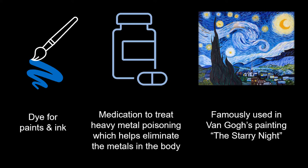Prussian blue is known to be used as a pigment, dye, and even medication. You probably recognize this color in the blue tones of Van Gogh's Starry Night.